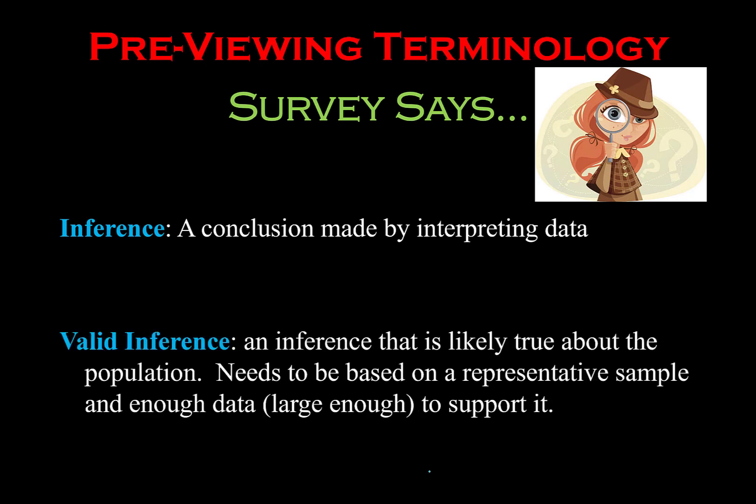If you have an unbiased survey and sampling, the main goal is to try to make an inference — to draw a conclusion about the data collected that relates back to the entire population. For example, if I select a random group of 6th, 7th, and 8th graders and find that 40% of the students play games on their cell phones, then I can infer that perhaps 40% of all 500 students in the school also play games on their phones.